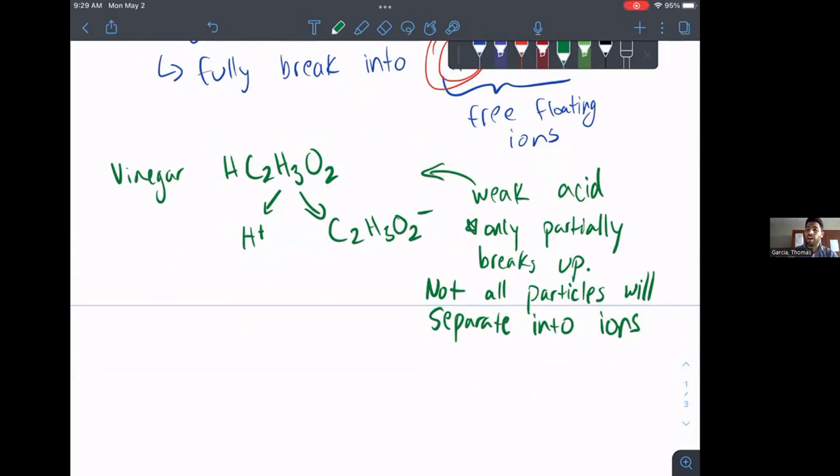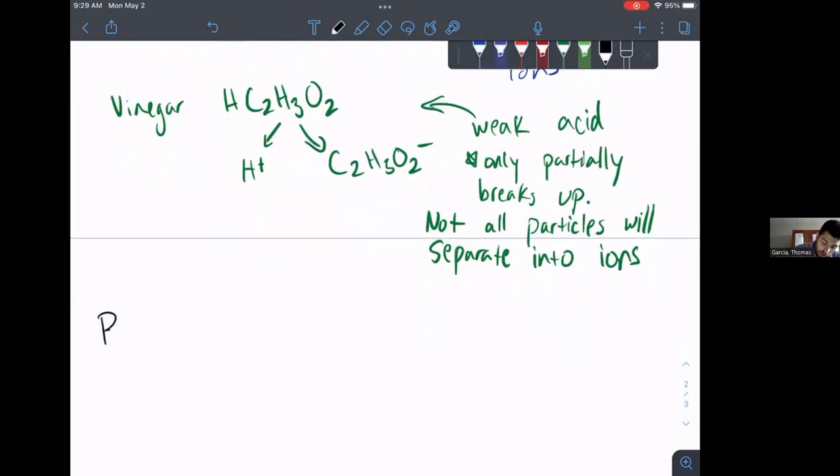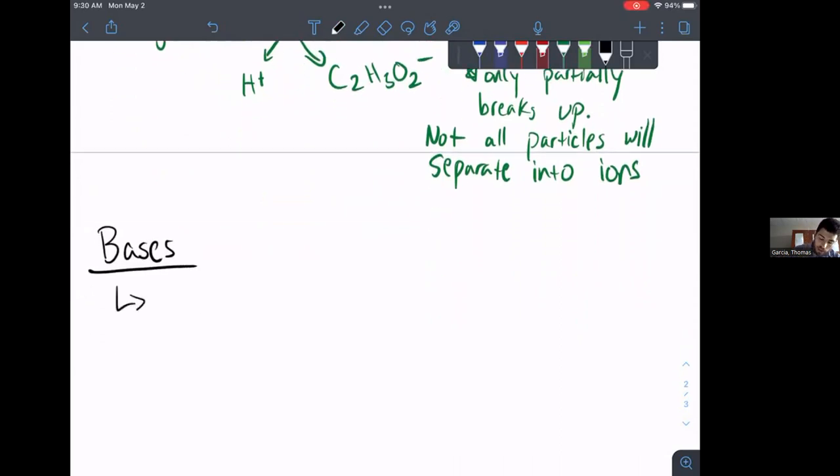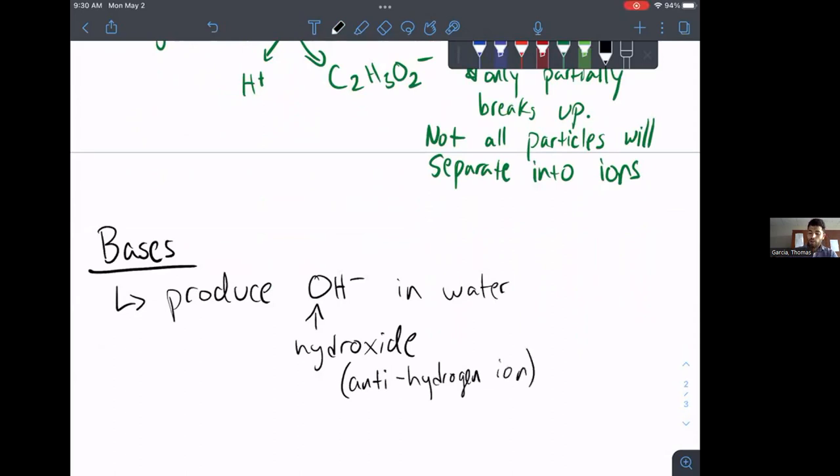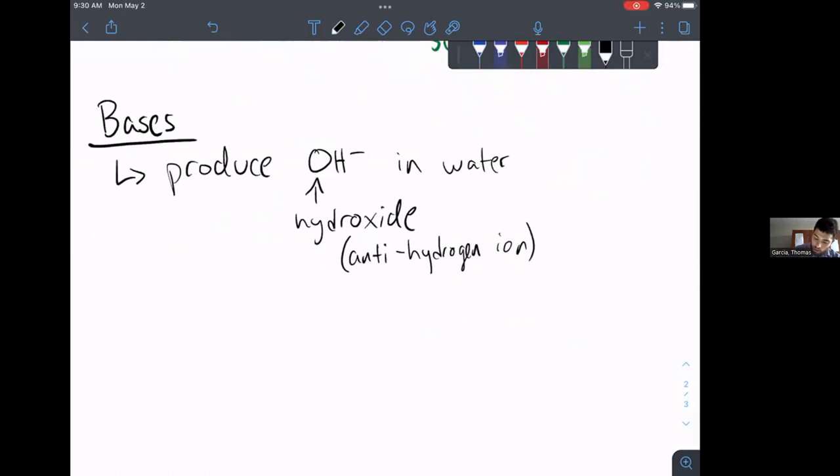So if that's, if acids donate hydrogen ions, what about bases? So we're going to quickly shift over into bases. Bases, we kind of think of as doing the opposite of adding a hydrogen. What they actually do is they produce OH- in water. Now this is what we call a hydroxide. And you can kind of think of it as kind of like an anti-hydrogen ion. So when you produce OH-, so if you have OH- and you have it just floating around in water, well, it turns out if it finds an H+, those two will react to make more water. So this kind of removes H+ ions from water.